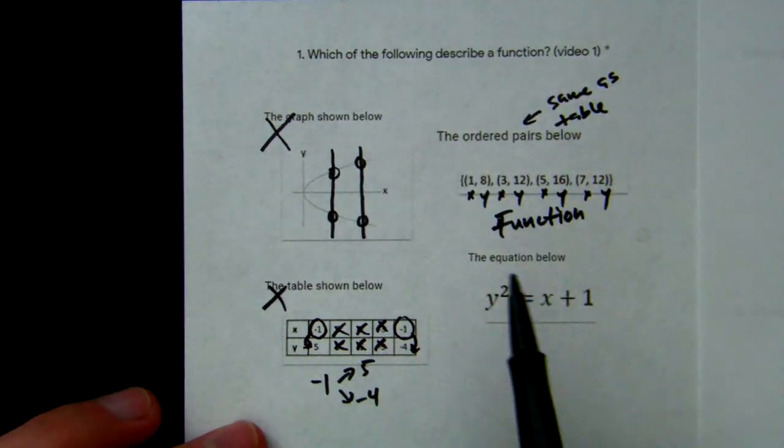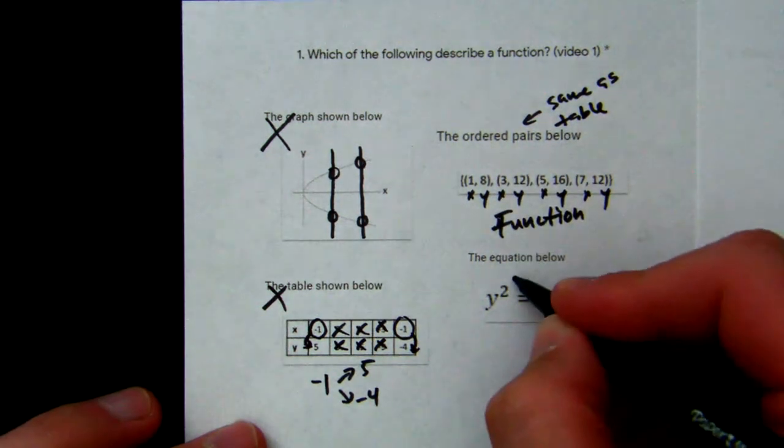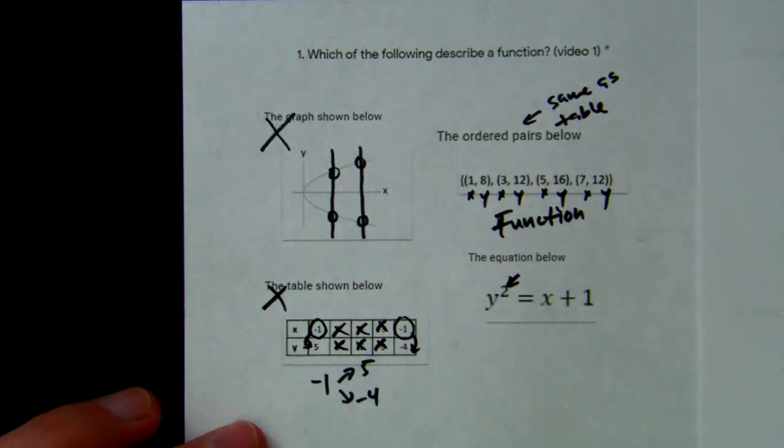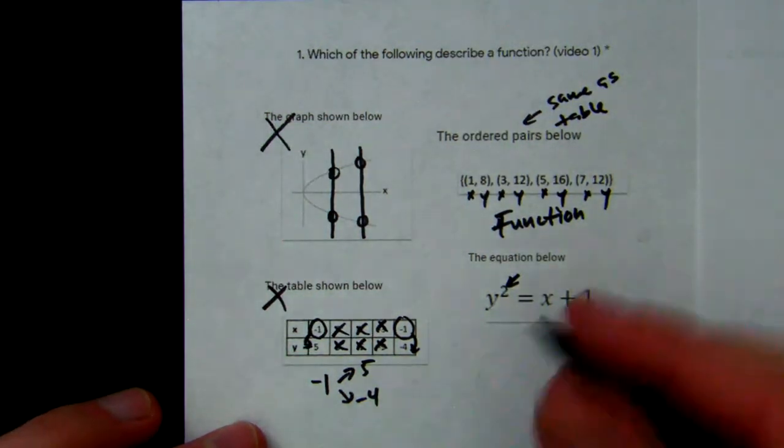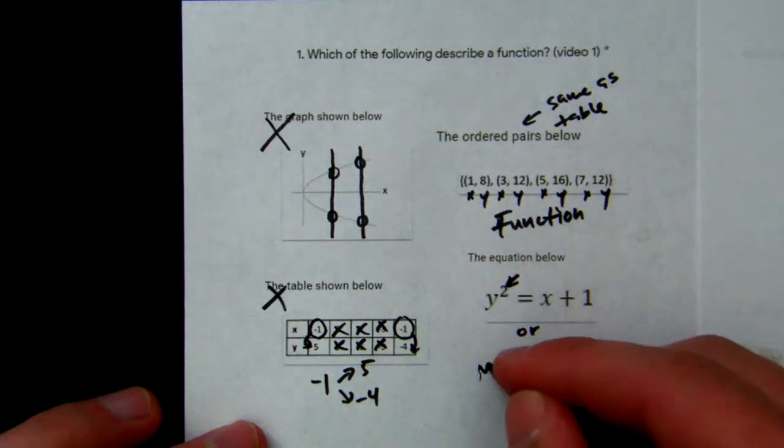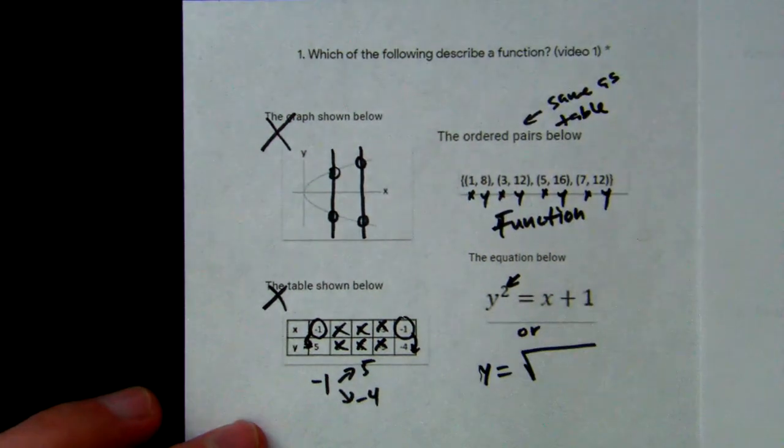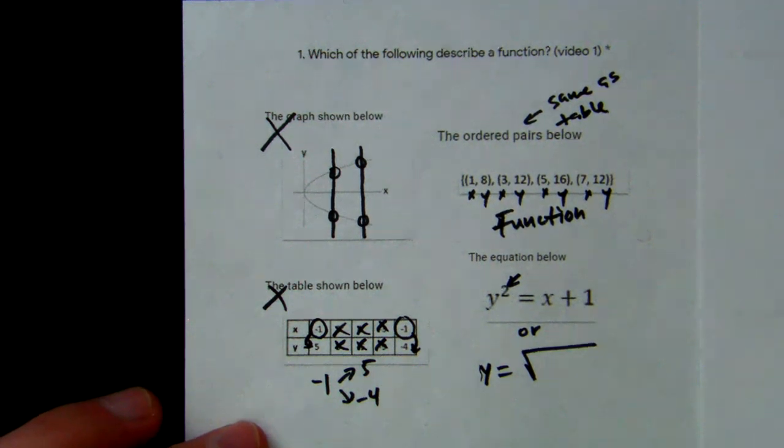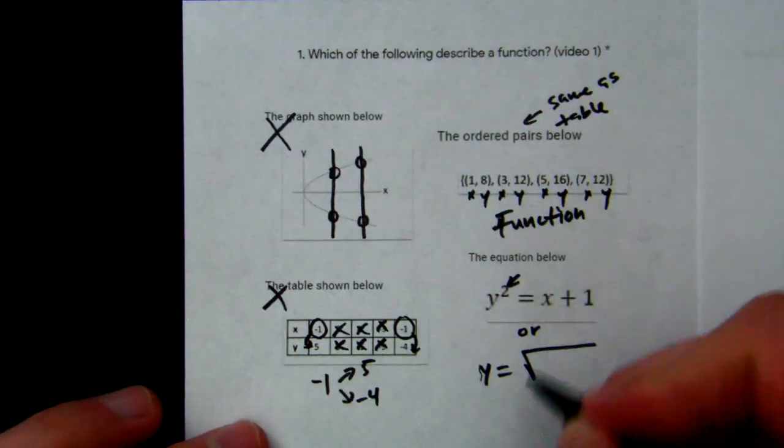Now let's double-check and look at the equation. The thing we're looking for in an equation to tell if it's not a function is an exponent on y, or y equals the square root of something. So if we have an exponent on y or if we have y equals the square root, that equation is not a function.